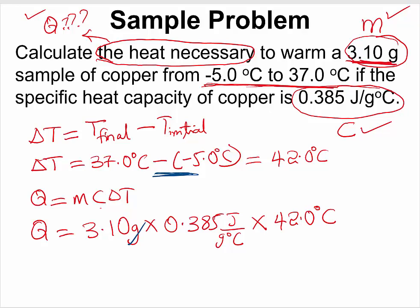Grams will cancel out, degrees Celsius will cancel out. If you plug all of these numbers into your calculator, Q will be calculated as 50.127, and since joules is the only unit remaining, that means the unit of our Q would be joules.